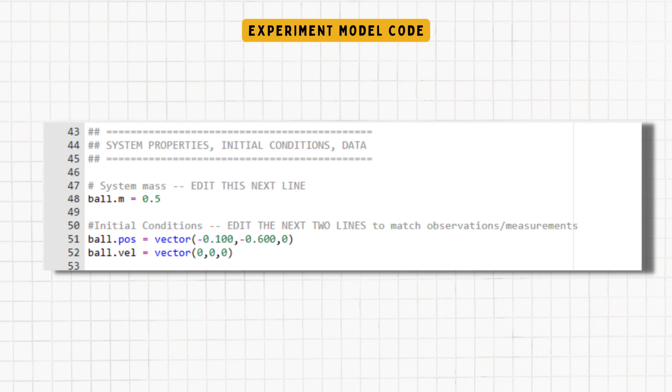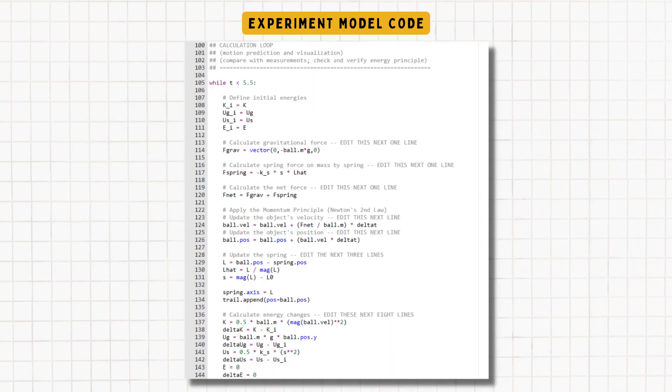Now, moving on to our experiment model code, the first thing that we would do would be to establish our system properties, which in this case would be the mass of our slinky and ball. And then for our calculation, we would have to define our initial energies, our gravitational force, our spring force, our net force, and also compute our momentum principle, aka Newton's second law, and use all of these objects to update the object's position along with the calculated tension.